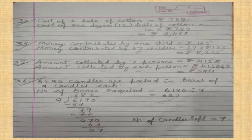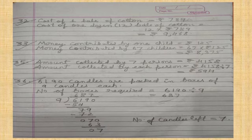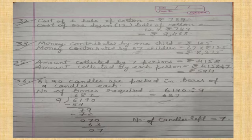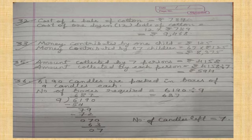Question thirty-four is home assignment — do it by yourself. Question thirty-five: Seven persons together planned a picnic. If they collected rupees four thousand one hundred fifty-eight in all, how much was contributed by each person? Write: amount collected by seven persons equals rupees four thousand one hundred fifty-eight. To find the amount per person, divide the total amount by seven. The answer is rupees five hundred ninety-five per person.